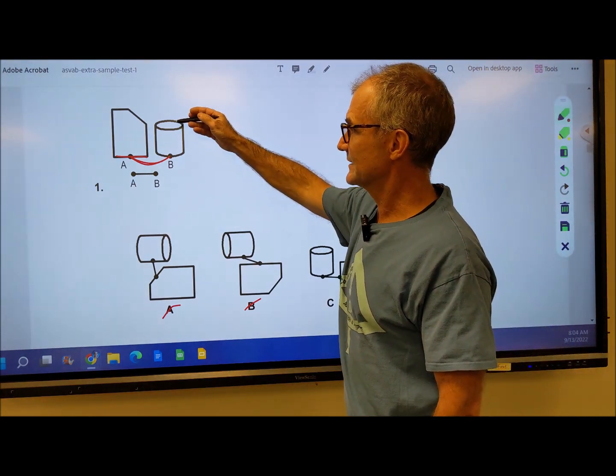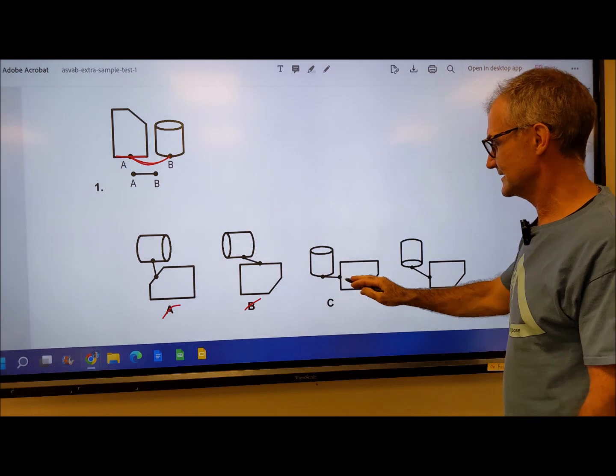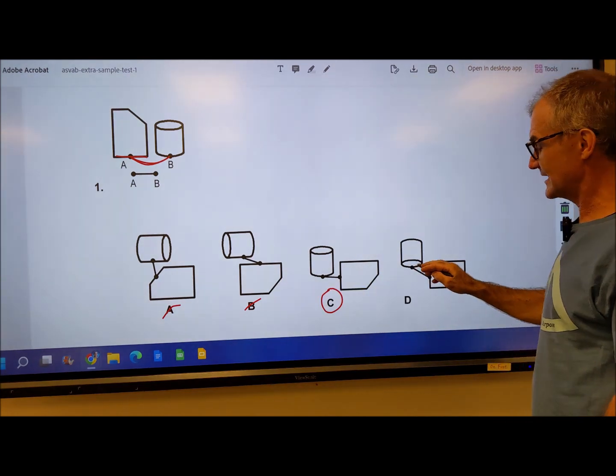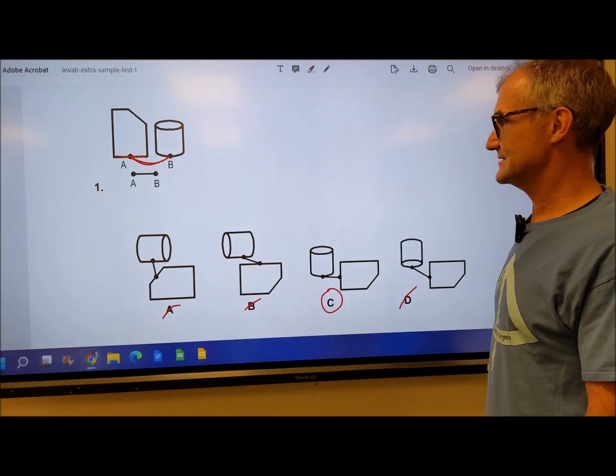Then I look towards B. There's the top of this can and there's a bottom. It's attached to the bottom of the can like it is here. It's attached to the top of the can here, so that's not it. Number one is C.